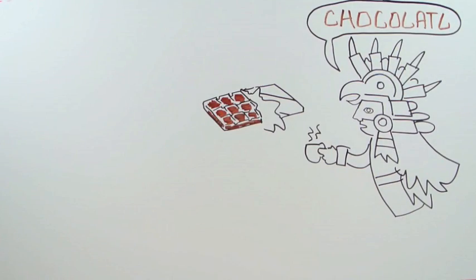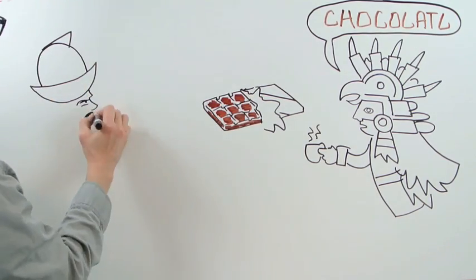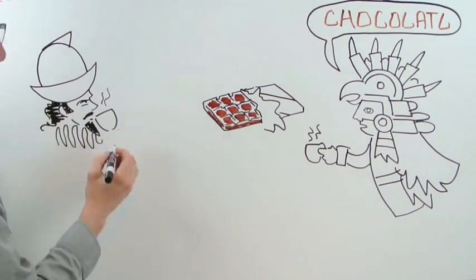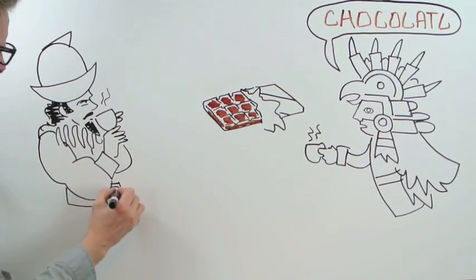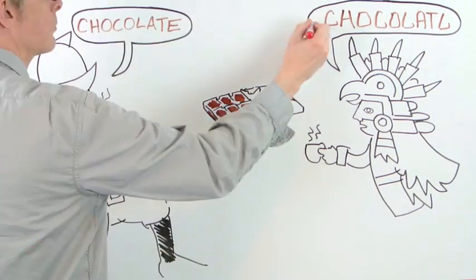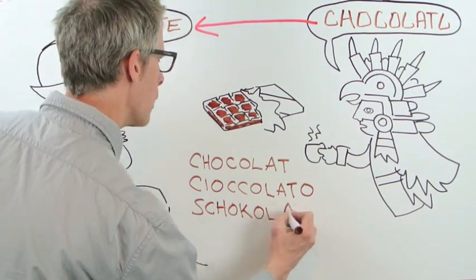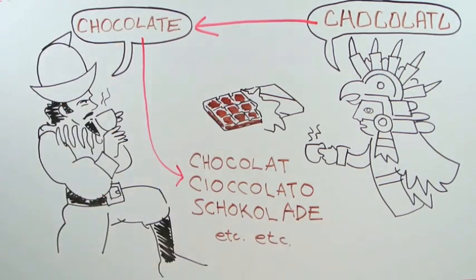One is borrowing. The word for chocolate is very similar across a whole range of languages that aren't related to each other. It's similar because all those languages borrowed the word. It originally comes from Nahuatl, an Aztec language, and spread to others after explorers brought it back to Europe in the 1500s.